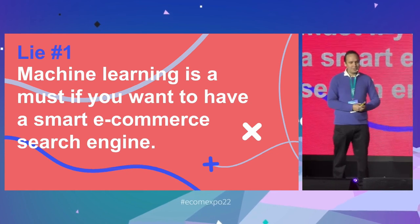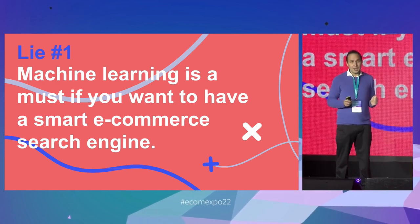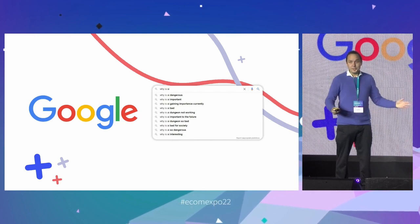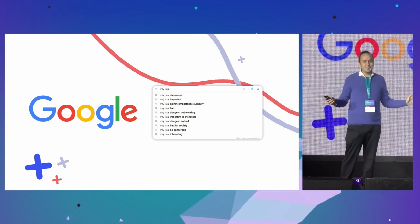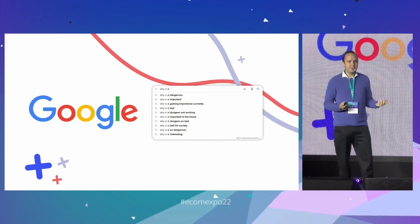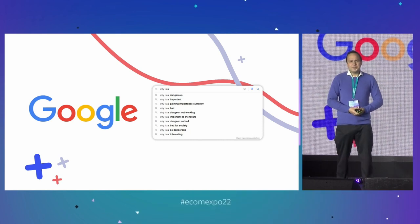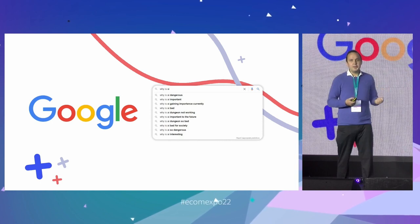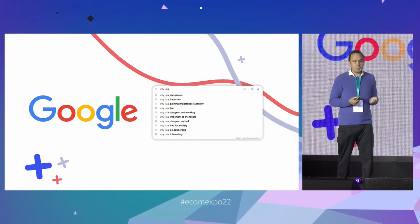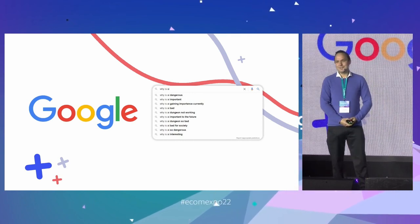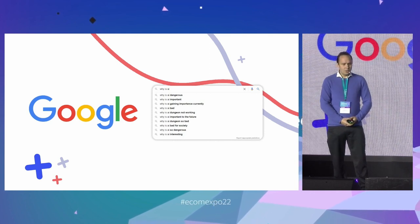Let's begin with lie number one: machine learning is an absolute must if you want to have great e-commerce search. We all grew up with Google at our fingertips — everything on the internet is just one quick search query away. Gone are the days when you need to browse through categories and folders to find what you're looking for. But this behavior kind of spoiled us, because now when we go to any e-shop, we expect its search to perform just as well as Google, which is unrealistic. Google has billions of dollars they can pour into their machine learning department — but does it mean you also need a big machine learning department? Certainly not.